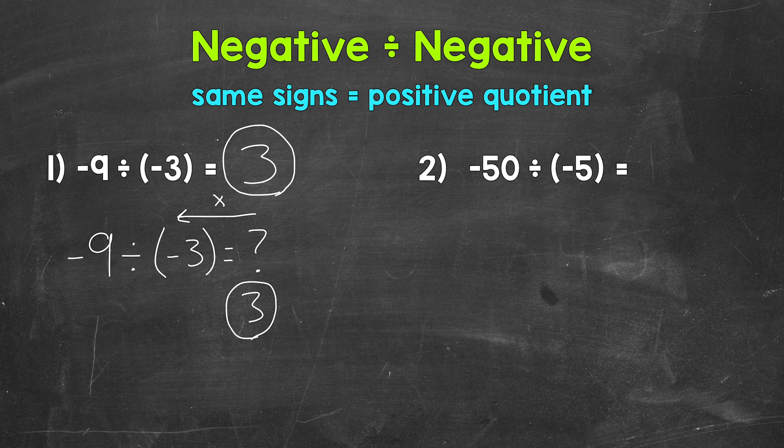Let's move on to number 2 where we have negative 50 divided by negative 5. So we have a negative divided by a negative, so same signs. That's going to give us a positive quotient. Let's think of this as 50 divided by 5, which gives us 10.